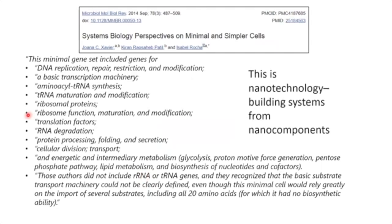The simplest cell has to have DNA replication, repair, restriction, and modification machinery. It has to have a basic transcription machinery, has to have aminoacyl tRNA synthesis, tRNA maturation modification, ribosome proteins, ribosome function maturation modification — all the way down.